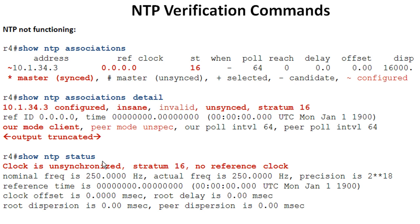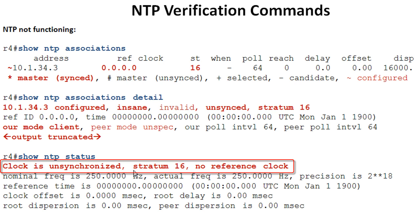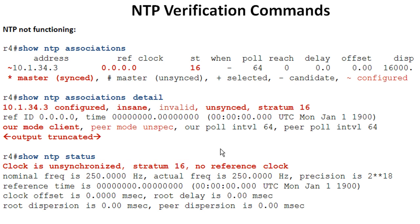'Show NTP status' shows the clock is unsynchronized and stratum is 16 with no reference clock. So if another device had configured us as its NTP server, it's not going to work — our clock is unsynchronized and stratum 16, so we won't advertise downstream either. That's why you really want multiple clocks in your NTP association, so if one goes down you're not stuck with an unsynchronized clock and unable to pass accurate time to the next stratum level.